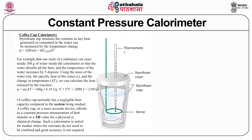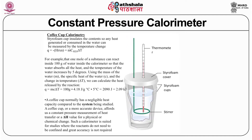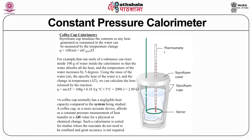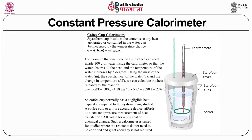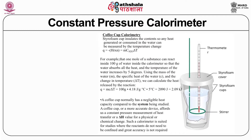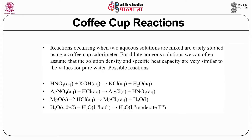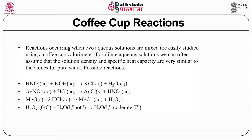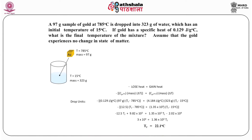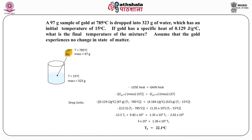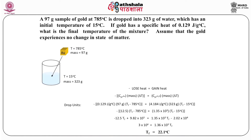The constant pressure calorimeter, also called the coffee cup calorimeter, has negligible heat capacity compared to the system being studied. It measures heat transfer or delta H at constant pressure for a physical or chemical change. It is suited for studies where reactants do not need to be confined and great accuracy is not required.